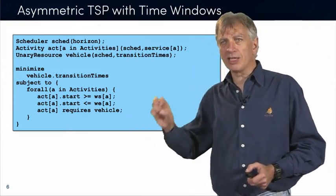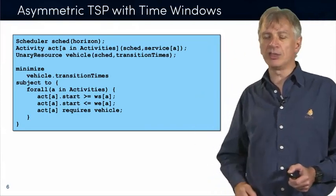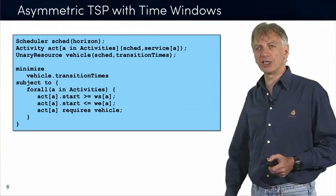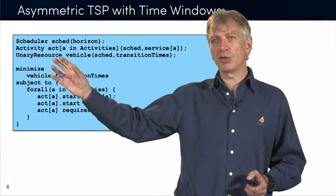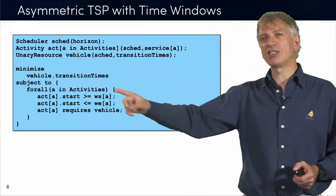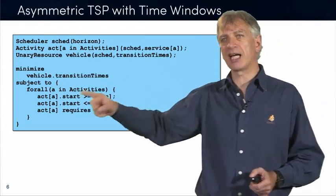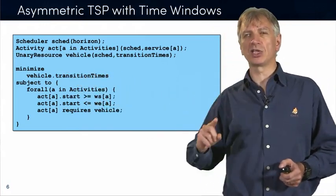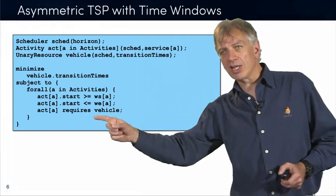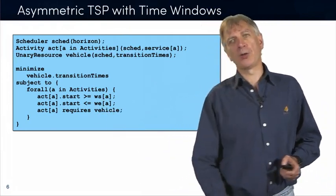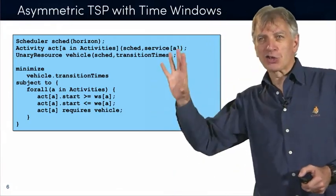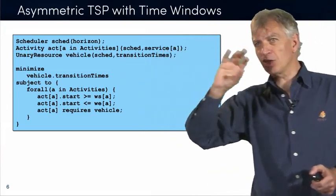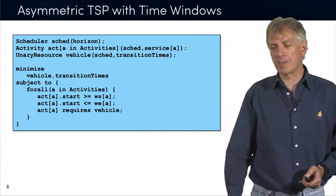So, this is how you can model it using the scheduling, the constraint-based scheduling. I don't expect you to understand all the details, but let me just give you the high-level overview here. You model every activity that the robot has to perform as an activity. And it has a particular service time, which is the duration that it takes. We model the robot itself as a unary resource. It's a vehicle here. And we have a transition time matrix here, which basically tells us how much time it takes to move from one location to another one. And so, the optimization is really minimizing the sum of the transition times for all the locations, subject to the time window constraints and the fact that the robot can only be at one particular place in time. So the key aspect that I want to show you here is that this is a very simple model. It doesn't require a lot of sophistication. It's a very natural modeling of the problem.